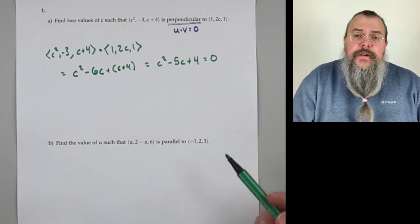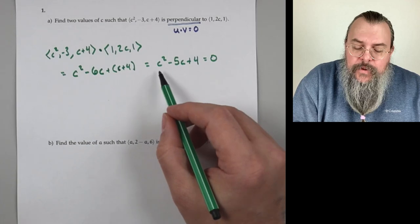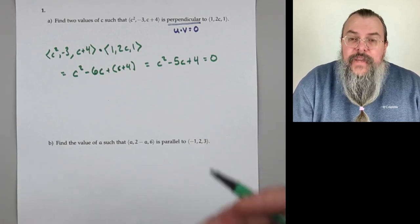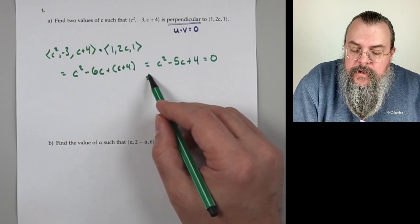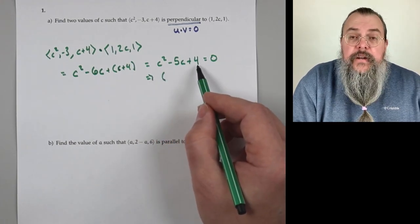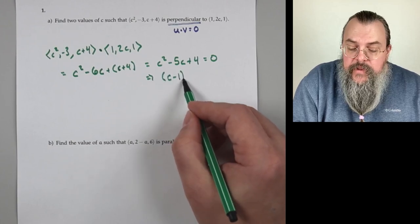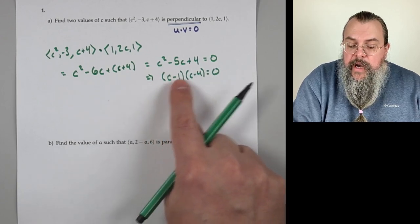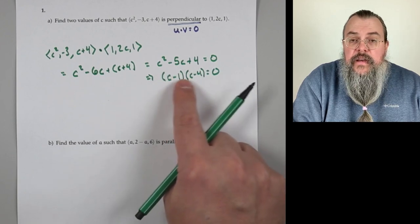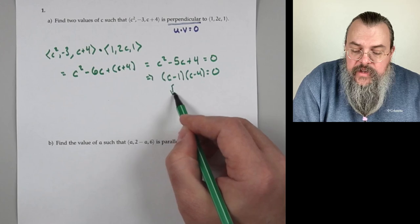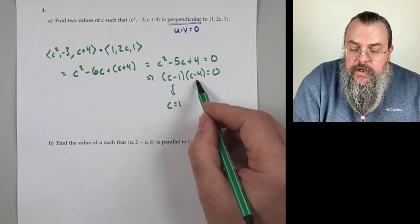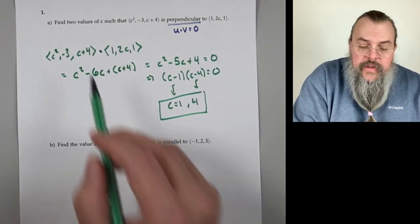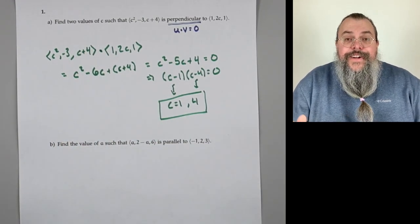We have a quadratic. We could do the quadratic formula, but I wouldn't be surprised if it factors — teachers that like you give you things that factor. We need two things that multiply to 4 and add to -5: that's -1 and -4. So we get (C-1)(C-4) = 0, which gives us either C = 1 or C = 4. Those are our two answers — they said two values, two answers, and done.